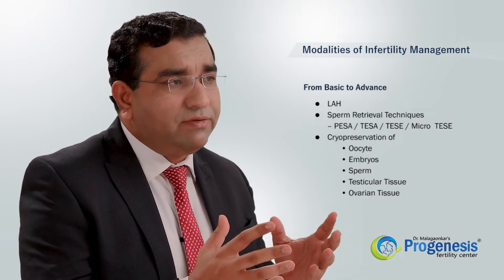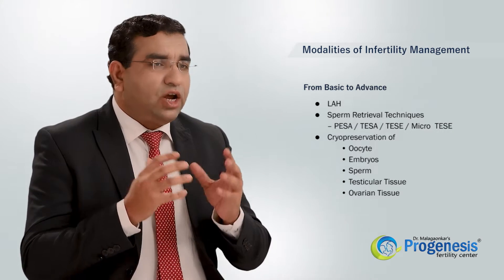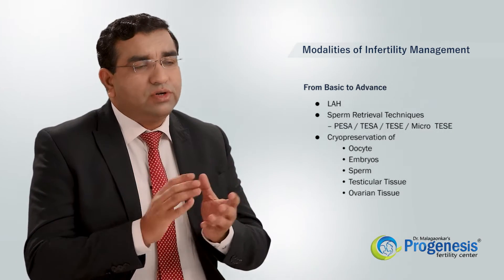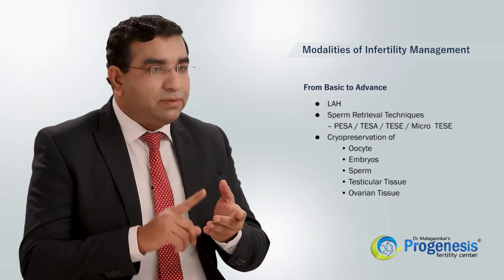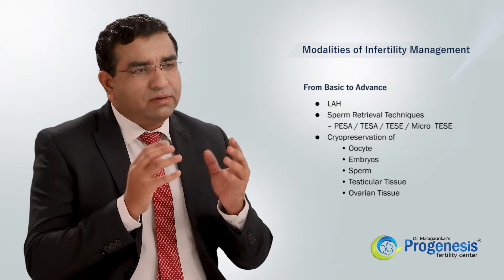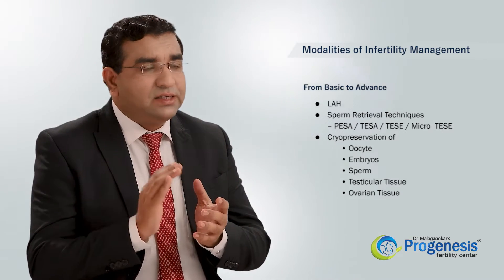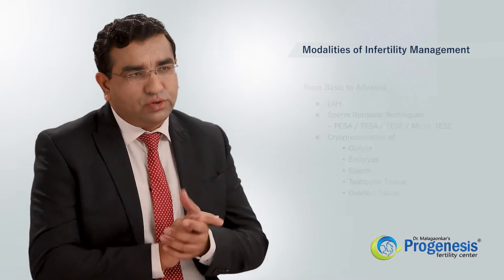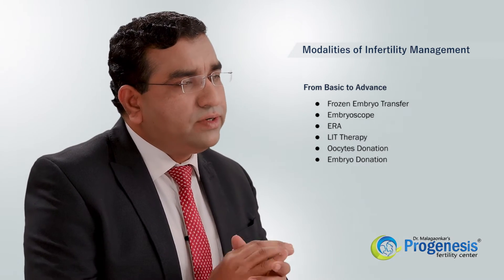These are the methods by which we can retrieve sperm. The next modality is cryopreservation — cryopreservation of oocytes, embryos, spermatozoa, and testicular or ovarian tissue. We can cryopreserve this tissue at minus 196 degrees Celsius. The next modality is frozen embryo transfer; routinely now we freeze all embryos and then perform frozen embryo transfer in natural cycles.